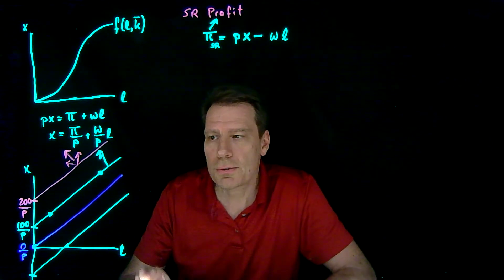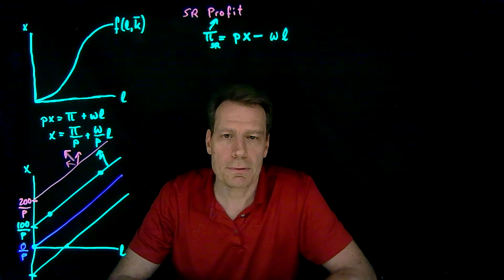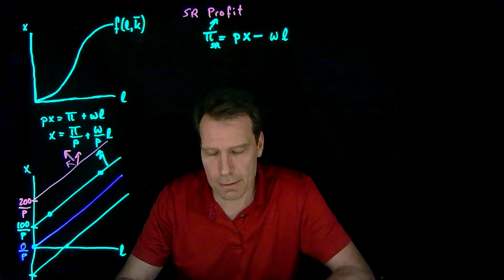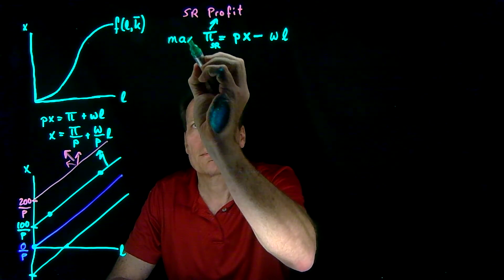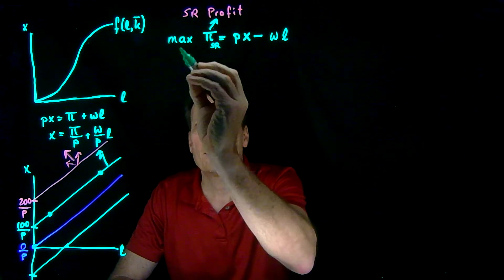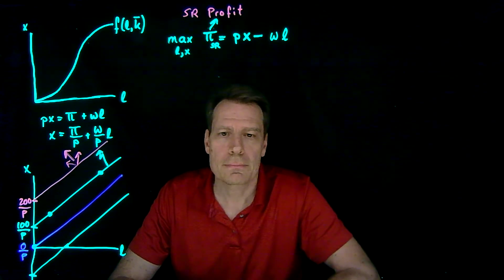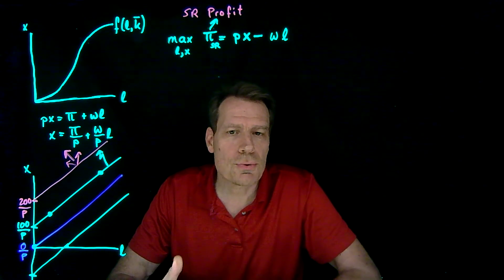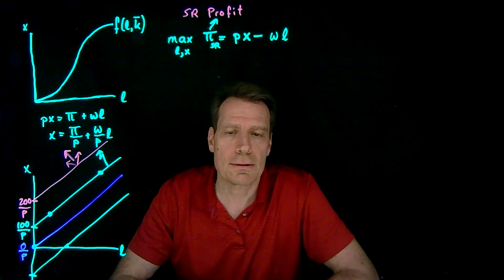Now, what the firm's going to try to do is try to get to the highest possible profit that's technologically feasible. We can write that mathematically as that the firm's going to try to maximize profit, move to the highest possible profit line, by choosing a production plan L, x.